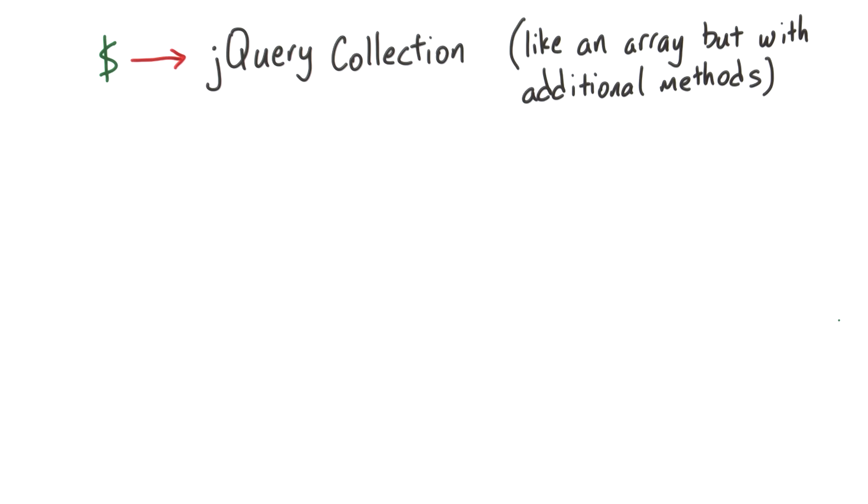So the dollar sign is just a function, but now what can you do with it? jQuery returns an array-like object, which we call a jQuery collection. The reason we say it's an array-like object is that it's an object that looks and behaves like an array, but also includes some additional methods.